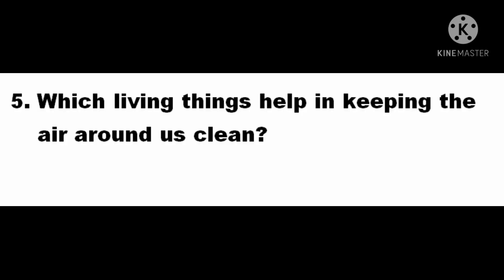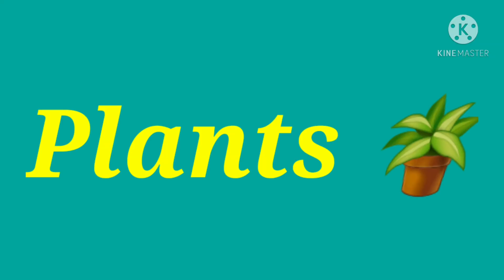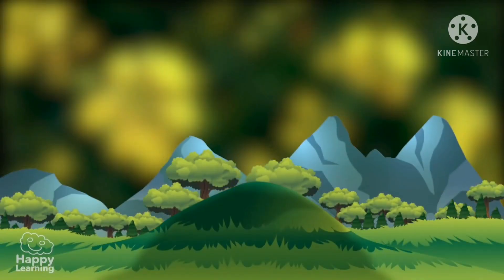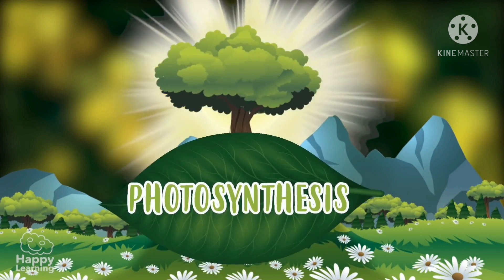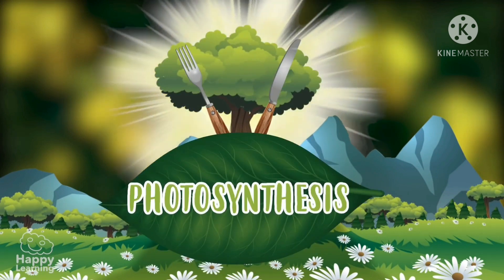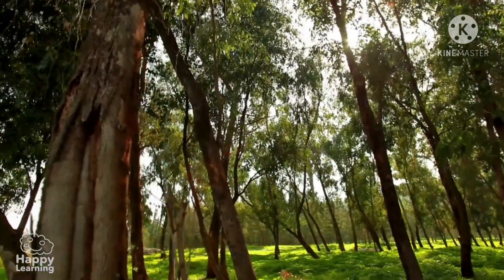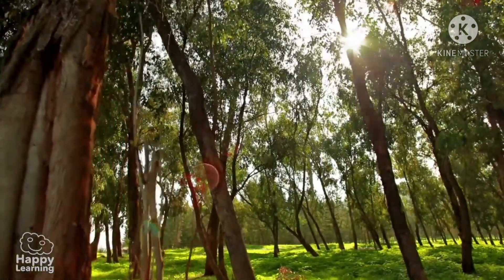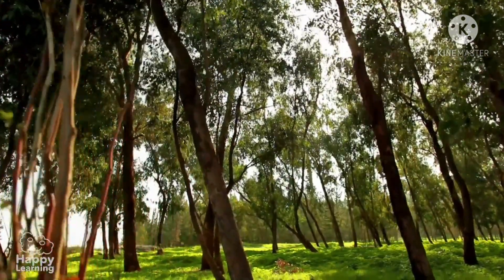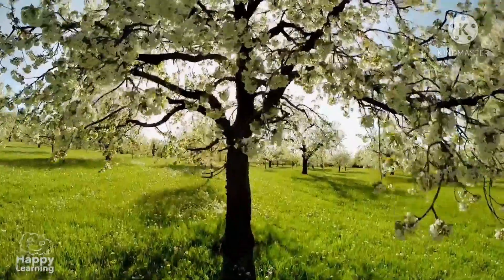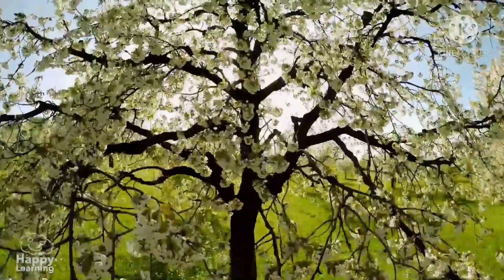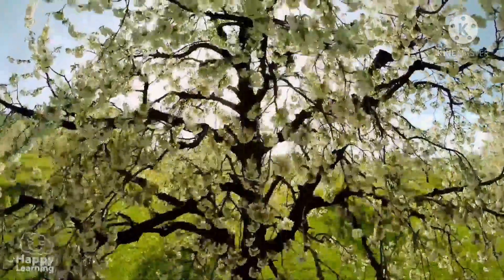Question 5. Which living things help in keeping the air around us clean? The correct answer is plants. Plants clean the air through the process of photosynthesis. As humans breathe in oxygen and breathe out carbon dioxide, plants do the opposite — they breathe in carbon dioxide and give out oxygen.